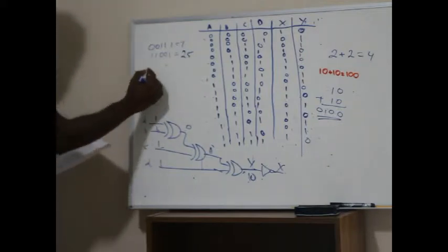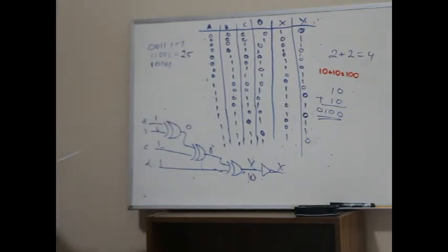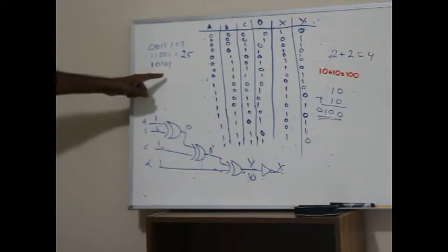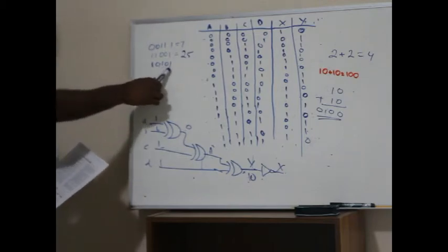Good. So how about 1, 0, 1, 0, 1. 21. Okay, 16 plus—oh no, no, that's 16. So 16 plus 5. Oh yeah, it's 21.